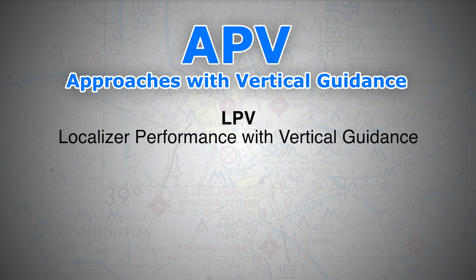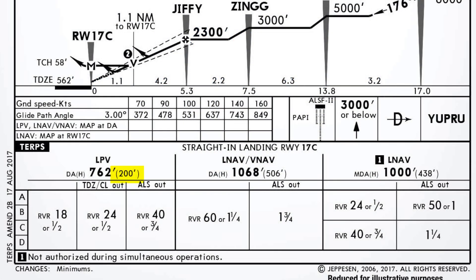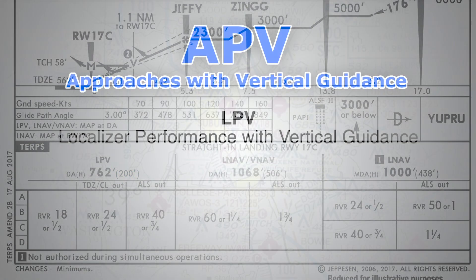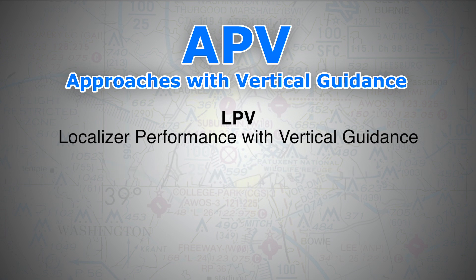Under the APV category we can find LPV — Localizer Performance with Vertical Guidance. This type of approach is an RNP approach; it provides both lateral and vertical guidance and can take you down to as low as 200 feet above aerodrome level. It is as accurate as an ILS, yet it is not considered a precision approach — it is an APV approach. To fly an LPV, your aircraft requires an SBAS receiver as well as SBAS coverage in the area of intended operation.